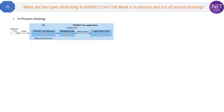As you can see in the diagram, in-process hosting uses IIS as the web server. So there is only one web server used in in-process hosting, and that is IIS. The name of the process is w3wp.exe — this is the key point about in-process hosting.